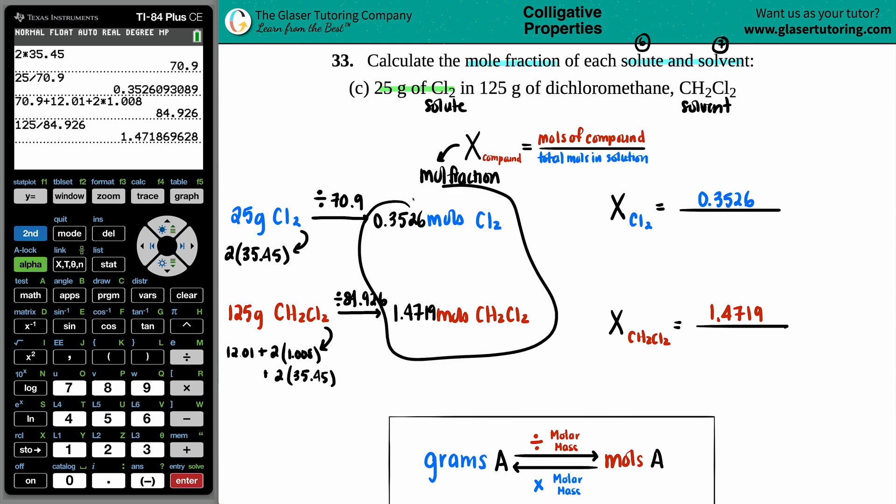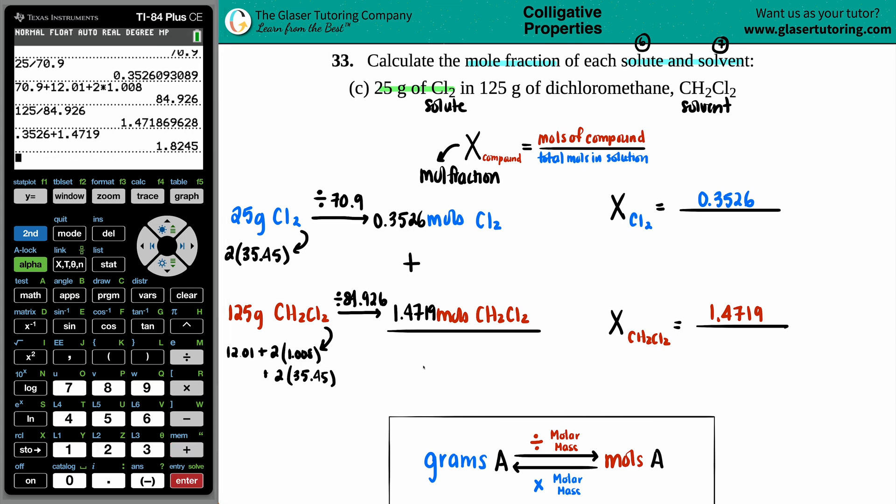But if these are all the moles that I have in my whole entire solution, what would I have to do to find the total? Yeah, you got it. We just got to add these numbers up. So 0.3526 plus 1.4719. I get roughly 1.8245. And that's your total moles.